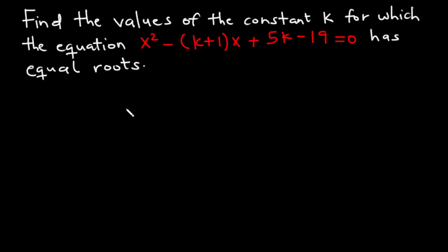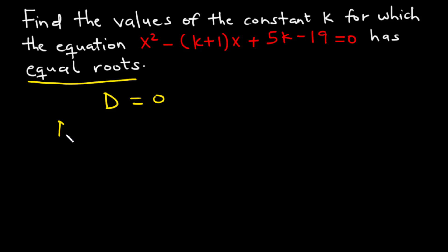From the previous lecture, we learned that a quadratic equation has equal roots if the discriminant is equal to 0. We know that the discriminant is given by D equals b squared minus 4ac.